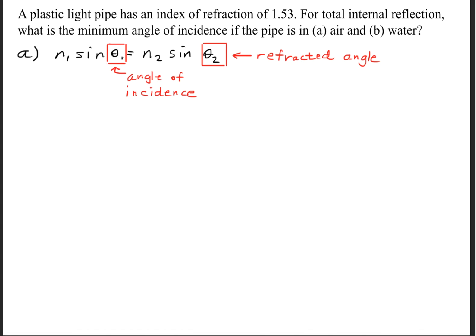I've boxed in these angles to make it clearer in case we've forgotten what these angles are. The second angle, theta 2, is the angle where the light ray gets bent as it passes into the second medium. We call this the refracted angle.